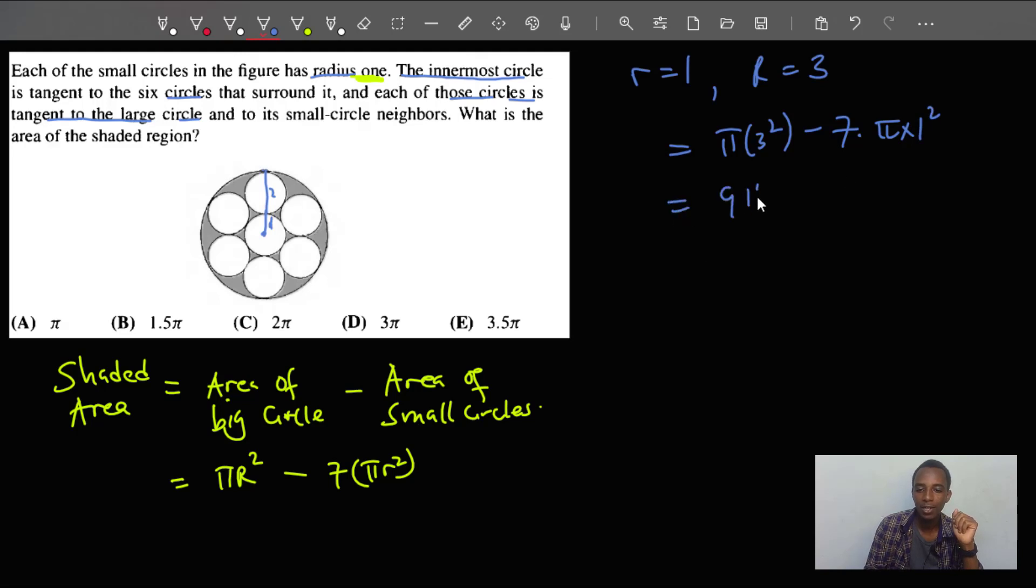Okay, so this is nine pi. Three squared is nine minus this is seven pi. And the answer here is two pi. So two pi is the shaded area, which is C. So this is the correct answer.